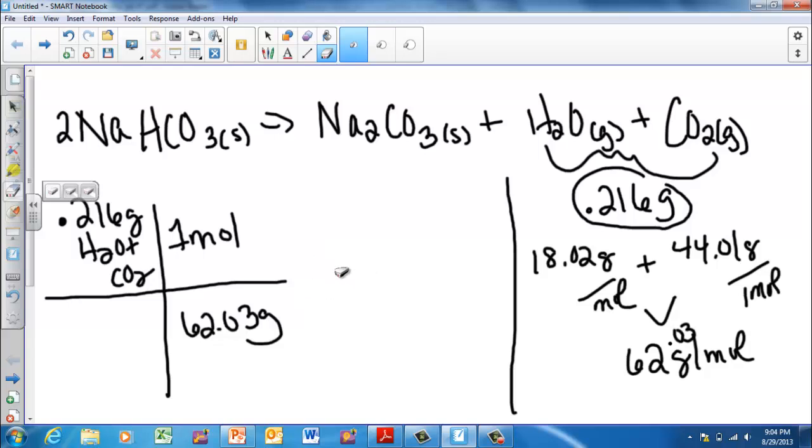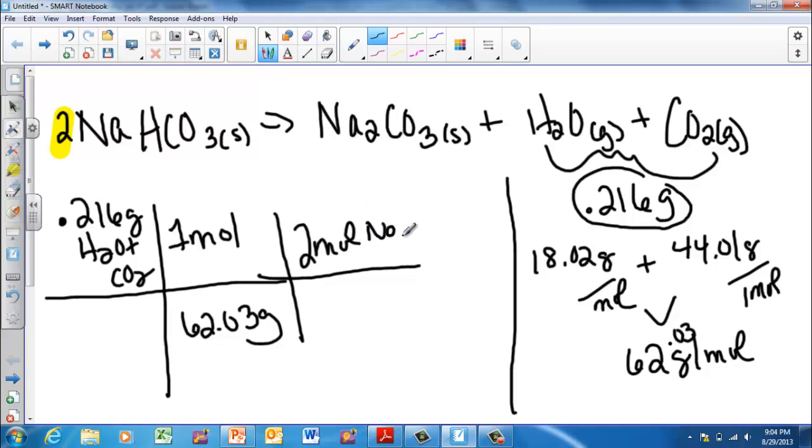However, that's not all the math I have to do, because if I come up here, I had one mole of my super product out here, but I started with two moles of the sodium hydrogen, or sodium bicarbonate. So what I have to then do is multiply that by two moles of sodium bicarbonate divided by one mole of water and carbon dioxide.